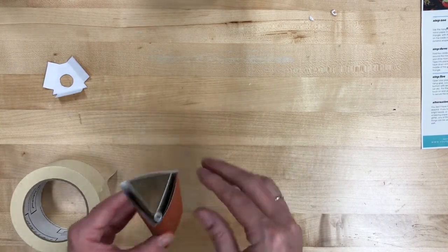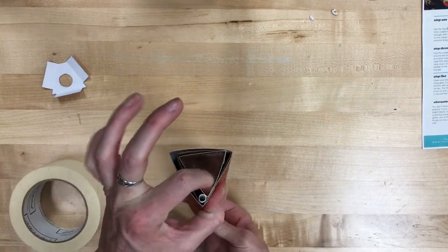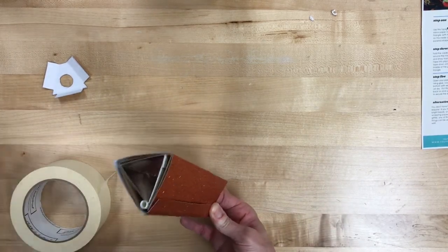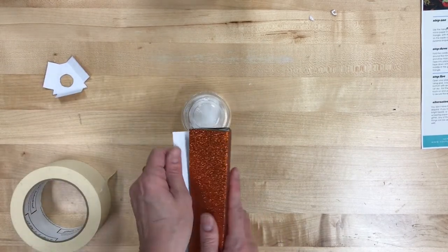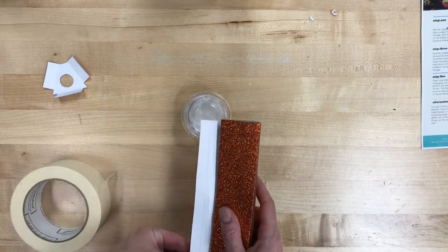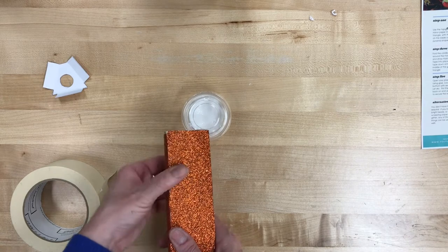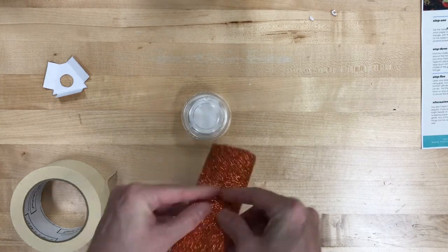And then for this last part, because we don't really want to see the tape, we want all of that glitter paper to be seen, we're going to use glue to tape that flap down. And you just kind of have to hold it until it glues. It takes a little bit of glue because the glitter is kind of a thick, rough paper. And that one just takes a little bit of patience.